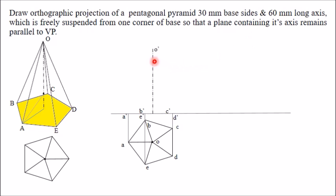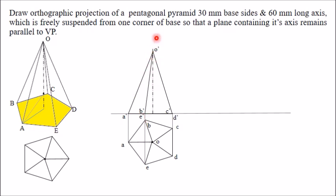Draw an axis from O — a vertical line — and mark the 60 mm height of the pyramid along this axis, marking point O-dash. From O-dash, join all sides: OA, OB, OC, OD, and OE. So you can see O-dash A-dash, O-dash E-dash, and O-dash D-dash. Behind O-dash D-dash you have O-dash C-dash, and similarly O-dash B-dash. The lines to B and C are not visible. In this way you have completed this first front view.